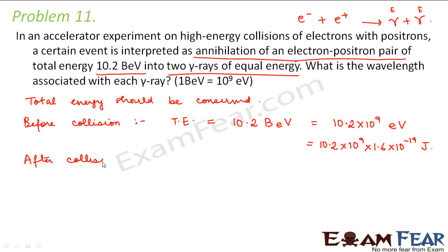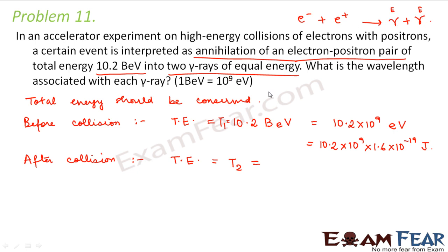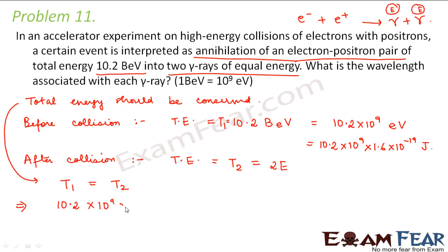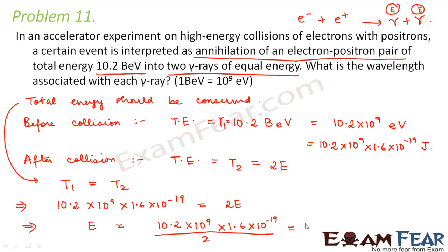After collision, two gamma particles of equal energy are formed. Let each have energy E, so the total energy after collision is 2E. According to conservation of energy, total energy before equals total energy after, so 10.2 × 10⁹ × 1.6 × 10⁻¹⁹ = 2E. This implies E = (10.2 × 10⁹ × 1.6 × 10⁻¹⁹) / 2, which comes out to be 8.16 × 10⁻¹⁰ joules. This is the energy of each gamma ray.